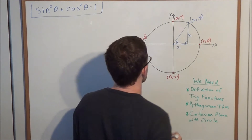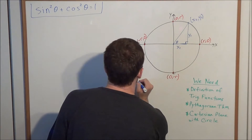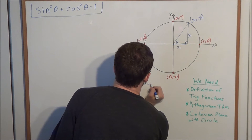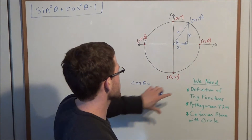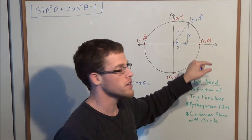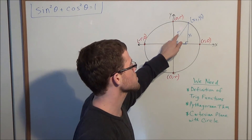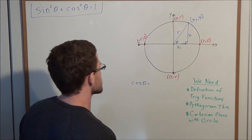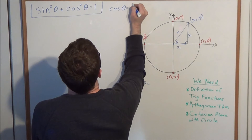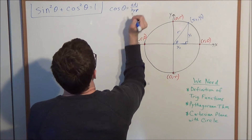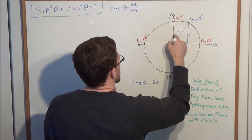Now what can we say about angle theta? This is where the definition of the trigonometric functions will come in. Let's look at cosine of angle theta. Before we evaluate it, let's call this missing side r. Since we are on a circle centered at the origin with radius r, the distance from the center to any point on the circle will be r — so we label the hypotenuse r. Cosine of angle theta is the ratio of the adjacent side to the hypotenuse, so that gives us x₁ over r.